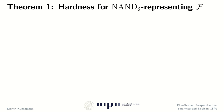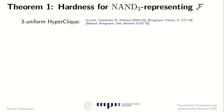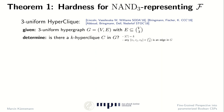The hardness result is based on a hypothesis on the three-uniform hyperclique problem. We are given a three-uniform hypergraph G — meaning every edge connects precisely three vertices — and the task is to determine whether there's a k-hyperclique C in G. A k-hyperclique is a set of k vertices such that any subset of three vertices of this clique indeed forms an edge in G.